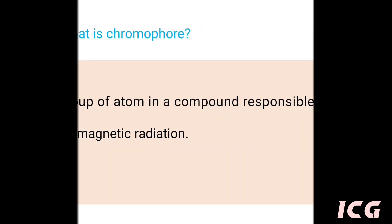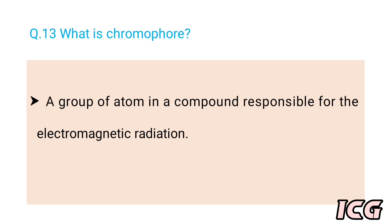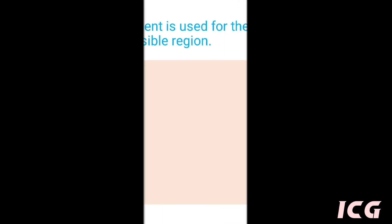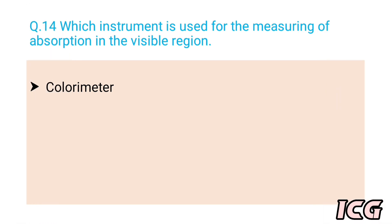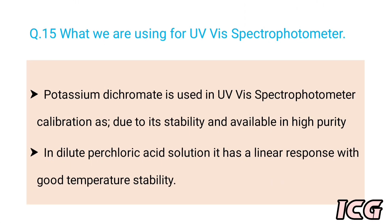The next question is: what is a chromophore? The answer is a group of atoms in a compound responsible for the absorption of electromagnetic radiation. The next question is: what instrument is used for measuring absorption in the visible region? The answer is a colorimeter. The next question is: what is used for UV-Visible spectrophotometer calibration? The answer is potassium dichromate, because of its stability, high purity availability in dilute perchloric acid solution, and linear response with good temperature stability.